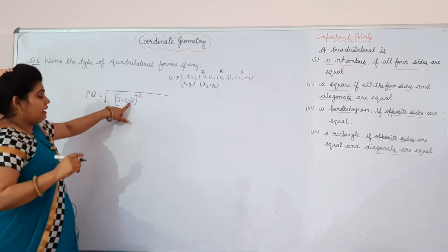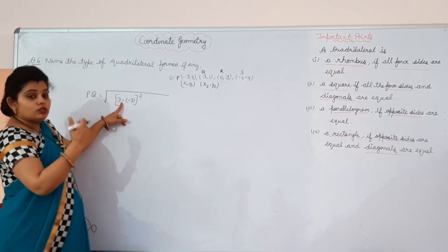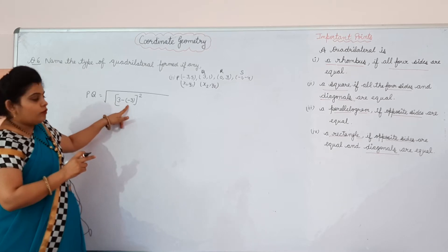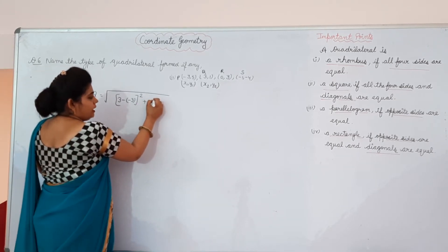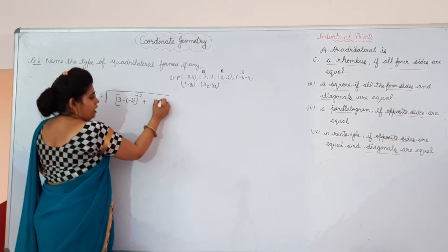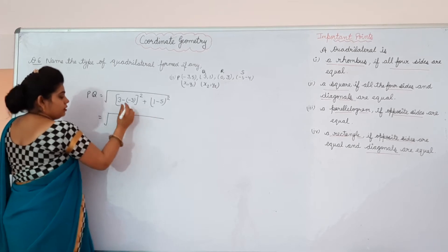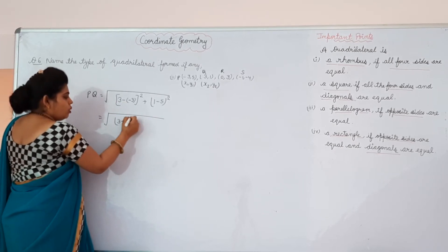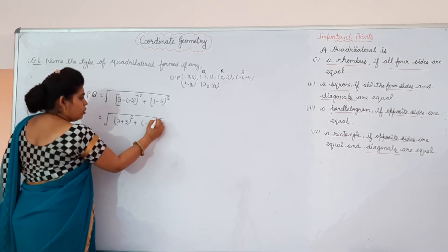But, you can make a mistake here - minus 3 is given here, and you might ignore one minus and write 0. So be careful while doing these questions. Plus, what will come here? 1 minus 5 whole square. Then, 3 minus minus, plus 3 whole square, plus minus 4 whole square.